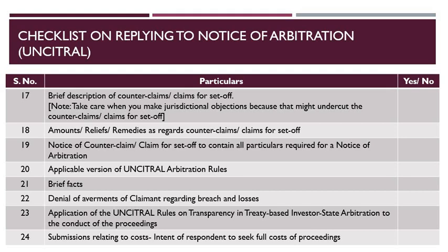Article 1-2 of the UNCITRAL Arbitration Rules 2010 states: 'The parties to an arbitration agreement concluded after 15 August 2010 shall be presumed to have referred to the rules in effect on the date of commencement of the arbitration, unless the parties have agreed to apply a particular version of the rules. That presumption does not apply where the arbitration agreement has been concluded by accepting after 15 August 2010 an offer made before that date.' So, for a proposal to arbitrate under UNCITRAL Arbitration Rules made after 15 August 2010 and accepted thereafter, the 2010 version of the rules is presumed to apply, unless the words specifically indicate that UNCITRAL Arbitration Rules 1976 will apply.